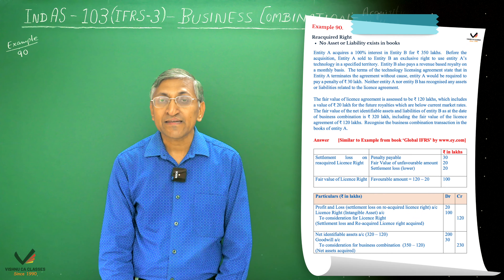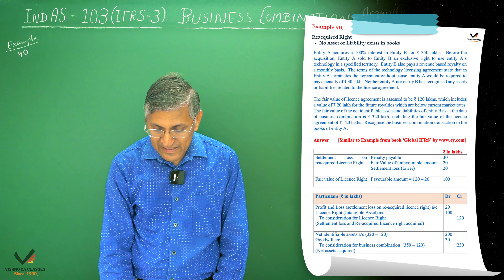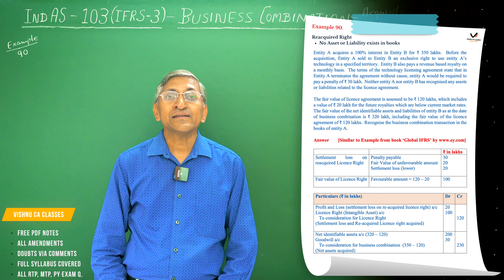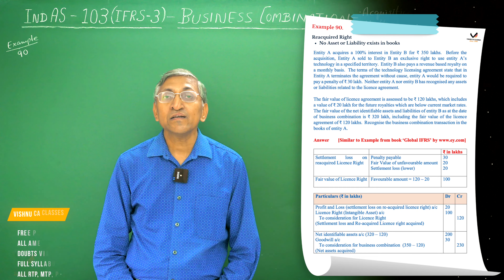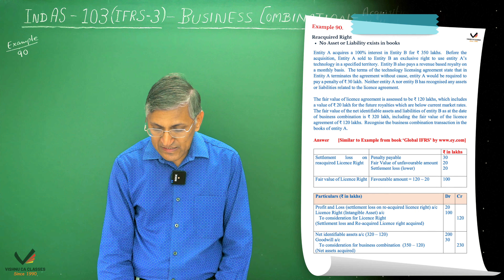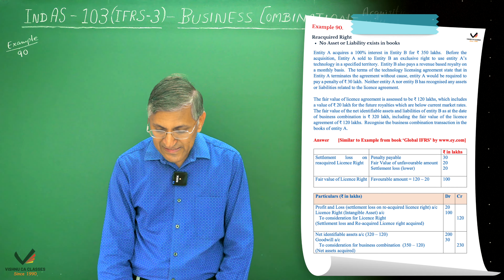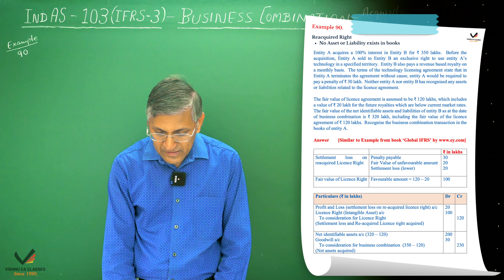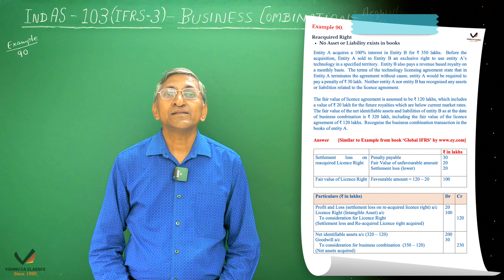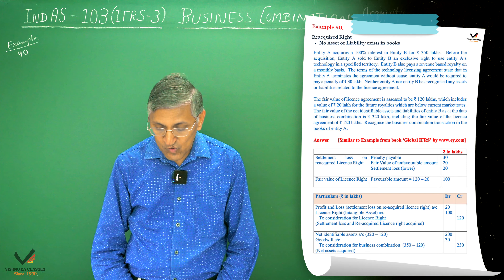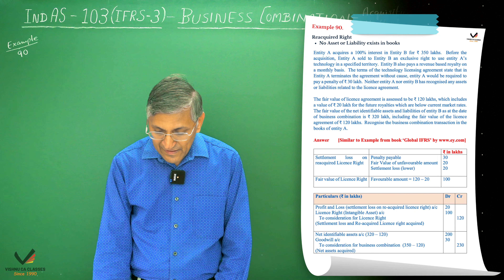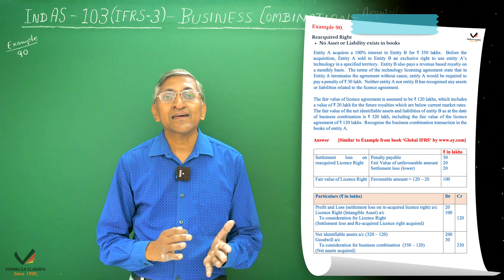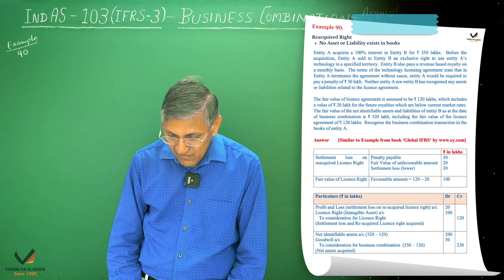In Example 90, entity A acquires 100% interest in entity B for rupees 350 lakhs. Before the acquisition, entity A had sold to entity B an exclusive right to use entity A's technology in a specified territory. Entity B also paid a revenue-based royalty on a monthly basis. The terms of the technology licensing agreement state that if entity A terminates the agreement without cause, entity A would be required to pay a penalty of rupees 30 lakhs. Neither entity A nor entity B has recognized any assets or liabilities related to the license agreement.